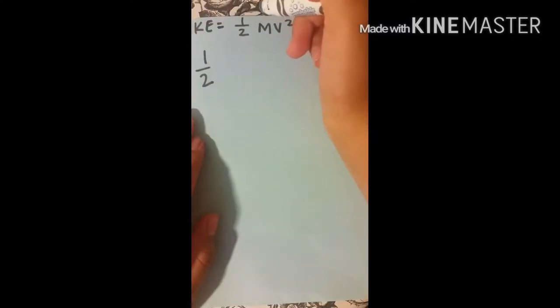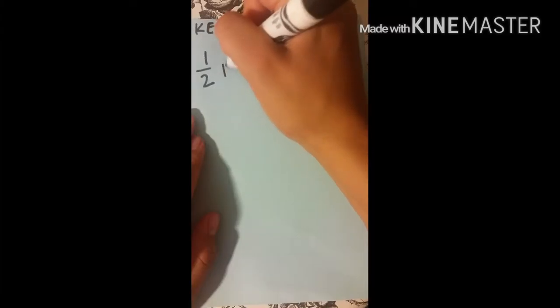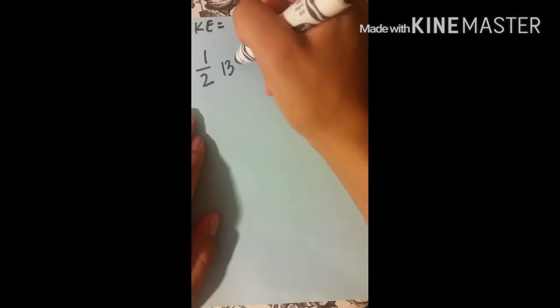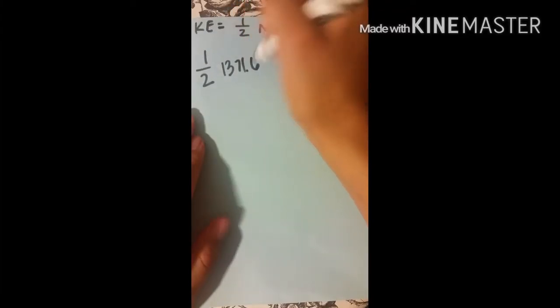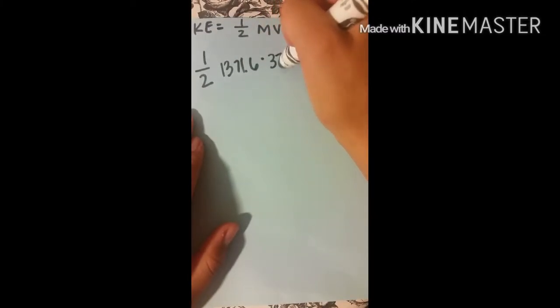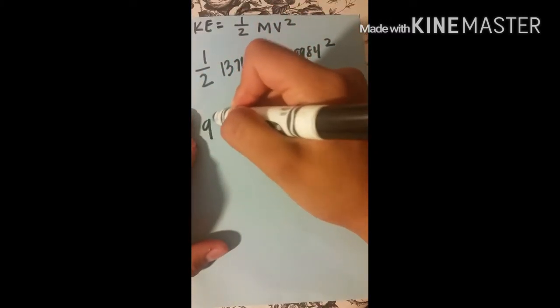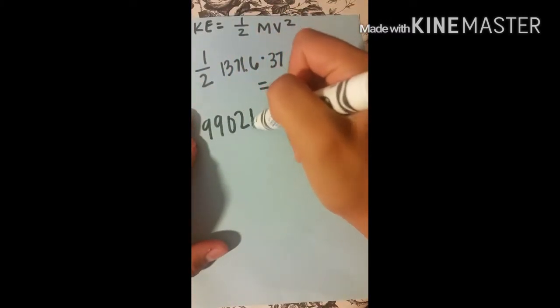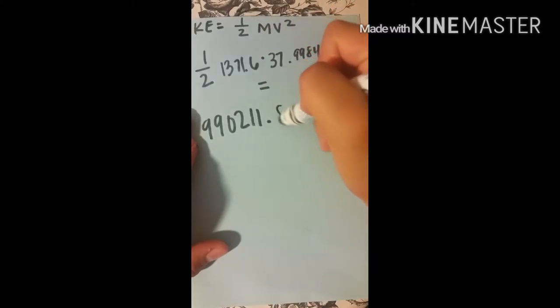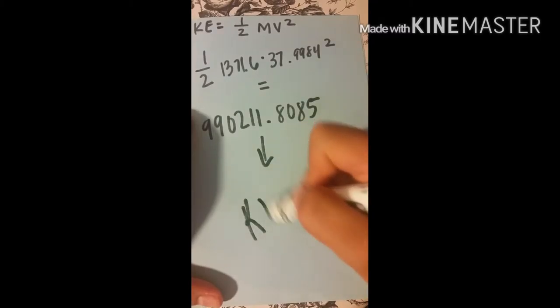Now, to solve kinetic energy, we are going to use one half and the length of our coaster is 1371.6 meters times our velocity which is 37.9984 square meters. And that is going to give us 9902118085. And this is our kinetic energy.